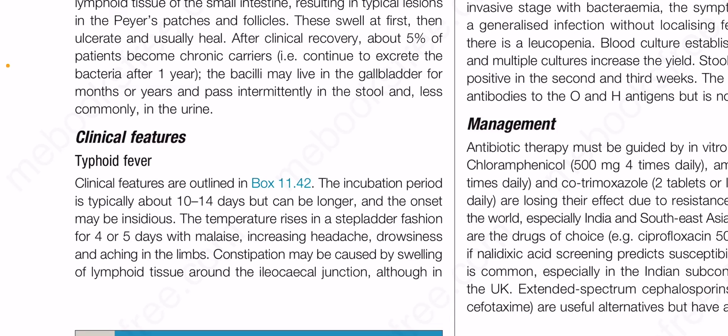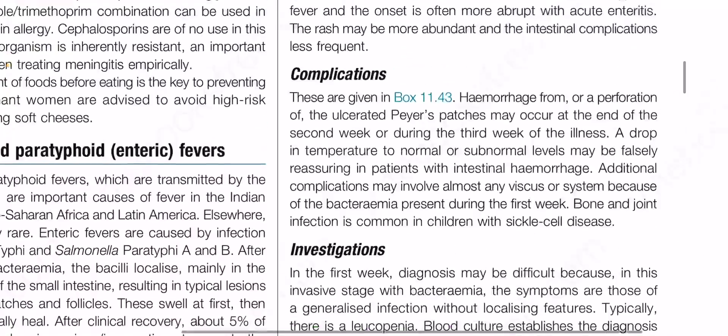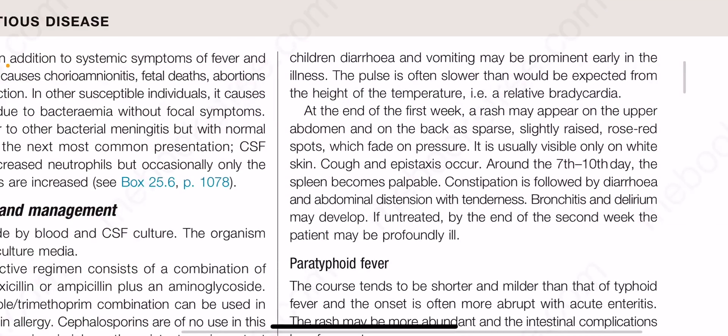Constipation may be caused by swelling of lymphoid tissue around the ileocecal junction, although in children, diarrhea and vomiting may be prominent early in the illness. The pulse is often slower than would be expected from the height of the temperature — that is, relative bradycardia.